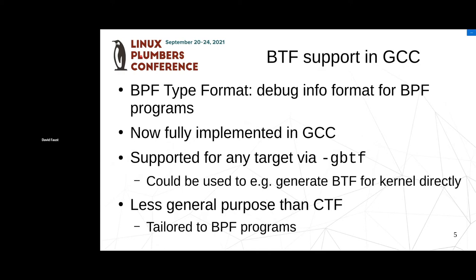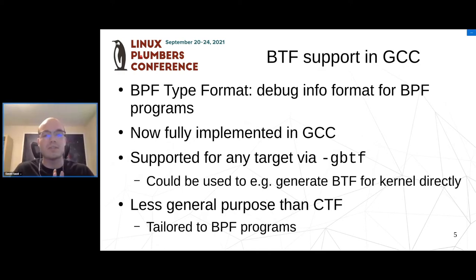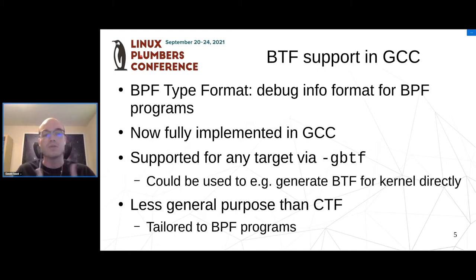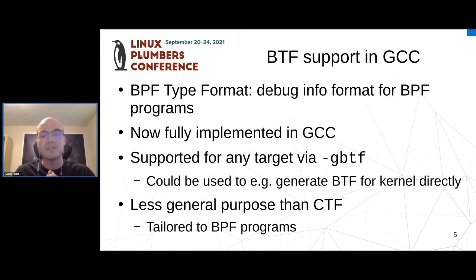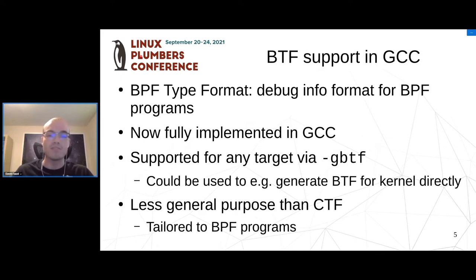The first thing I want to talk about is BTF support that's now in GCC. BTF is the BPF type format — it conveys type information as well as general debug information for the kernel to load BPF programs and make use of. One interesting thing about the implementation in GCC is that it's supported for any target via the -gbtf flag. That means you can generate BTF information for the kernel directly when compiling for x86 or AArch64, rather than the traditional method of generating DWARF and converting it to BTF.